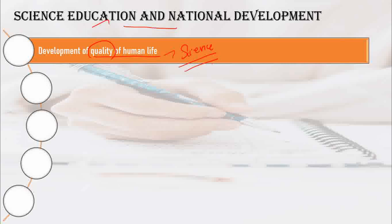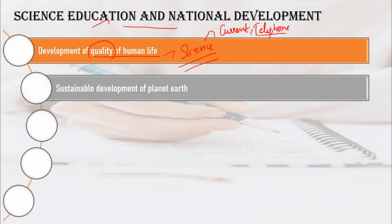Scientific discoveries have changed how we live. Currently we have the telephone — invented by Graham Bell — and the electric bulb. These discoveries have transformed our way of life.